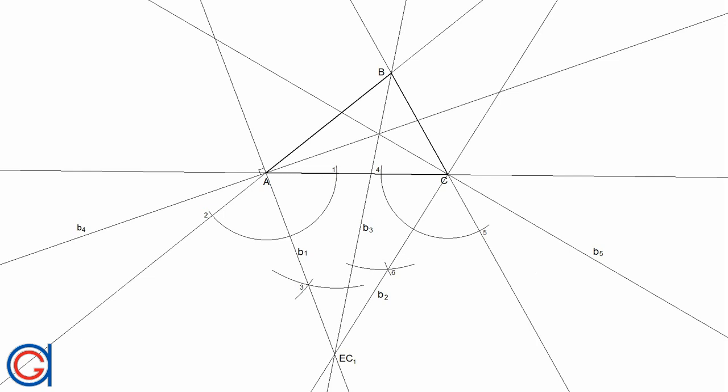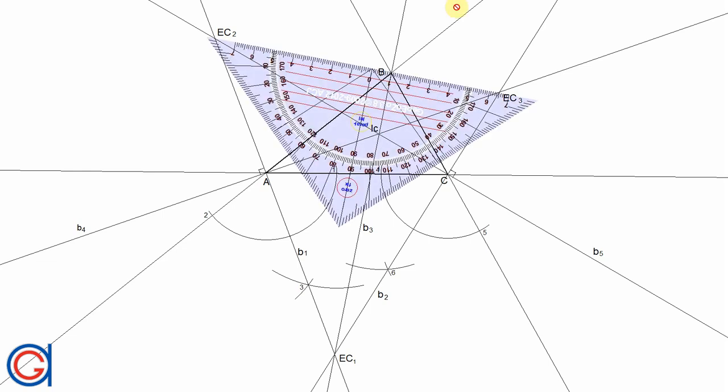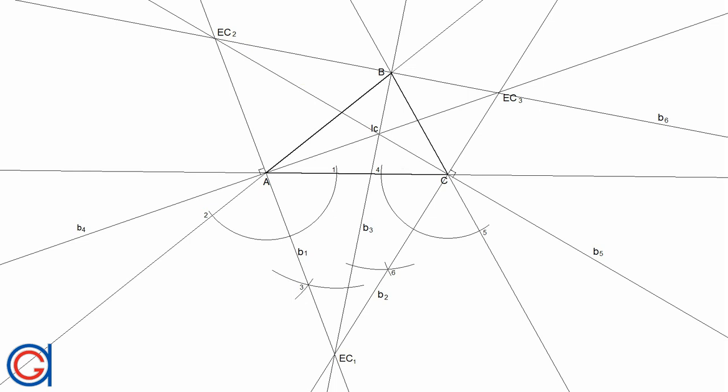With these angular bisectors, we obtain two remaining x-centers, highlighted here in red, and the in-center highlighted in blue. Now joining EC2 and EC3, we are going to get the last angular bisector, which we will call B6, and elongate it on both sides again.